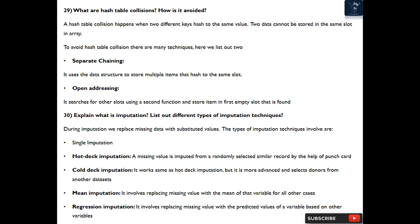Regression imputation: it involves replacing missing value with the predicted values of a variable based on other variables. Multiple imputation: unlike single imputation, multiple imputation estimates the values multiple times.